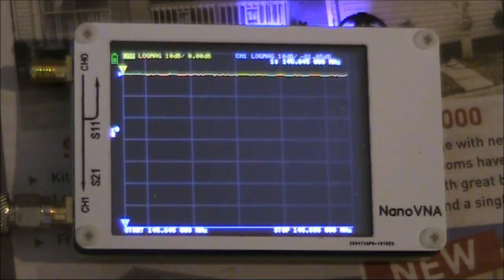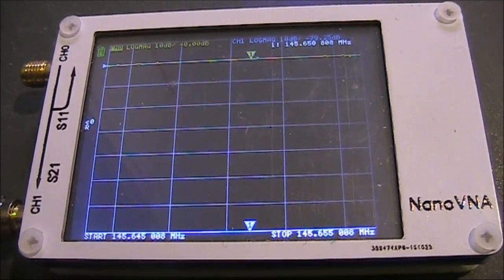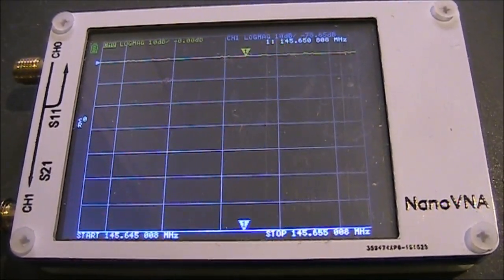This is 145.650. There's a CW beacon there. Just apply a local signal. Just connect an antenna for two meters. And still not seeing anything.